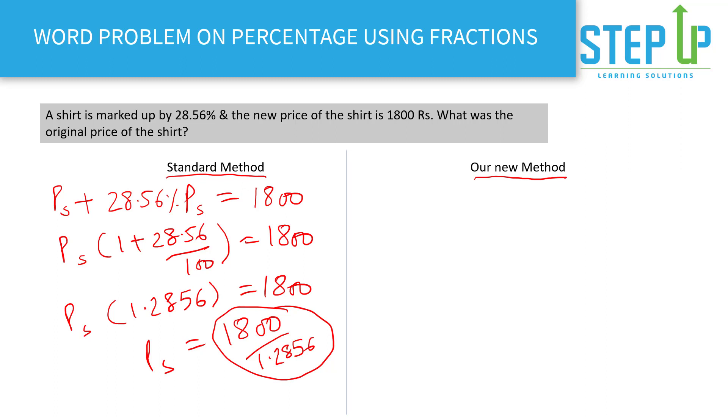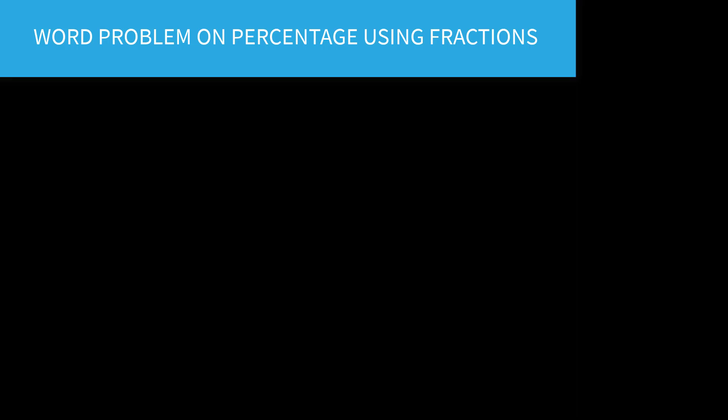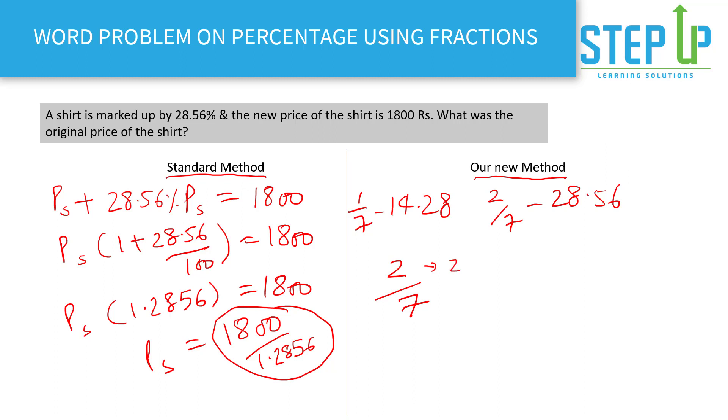Our new method says the moment you see 28.56, what should ring a bell? One by seven is fourteen point two eight, and two by seven would be nothing but twenty eight point five six. That means if you add two in the seven, that means it has increased by 28.56%. That means if the original price of the shirt was seven, and if you added two, it would increase by 28.56%, so it would have actually become nine. Nine would be the new price, but they are saying in the exam it's not nine, it's 1800. That means all you have to do is there's a multiplying factor of two hundred - nine into two hundred which is 1800.